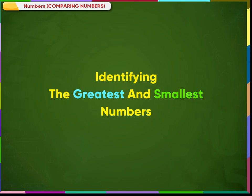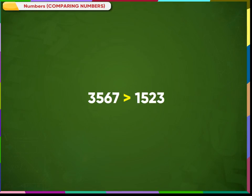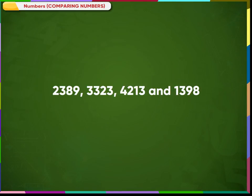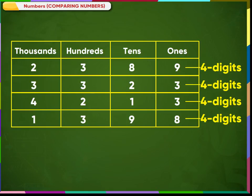Identifying the greatest and smallest numbers. We have learnt to compare two numbers. In the same way, we can compare three or more numbers and find the biggest and the smallest number in a group. Let us consider four numbers and find the greatest and smallest: 2389, 3323, 4213, and 1398. Let us place the numbers in the place value chart and compare the digits from left to right. We see that 4 is the biggest digit, so 4213 is the biggest number.